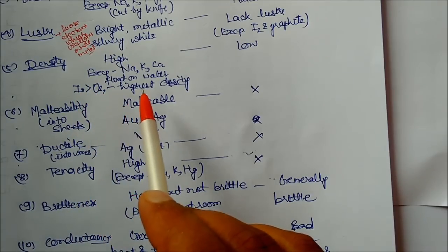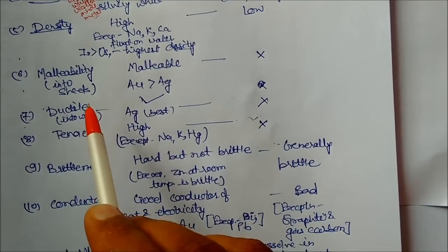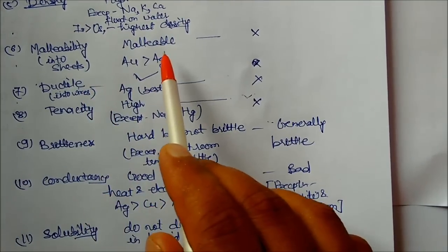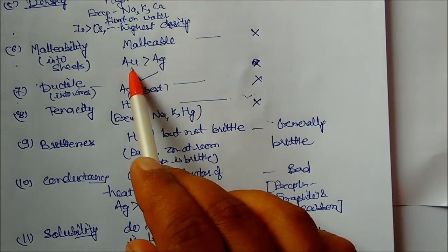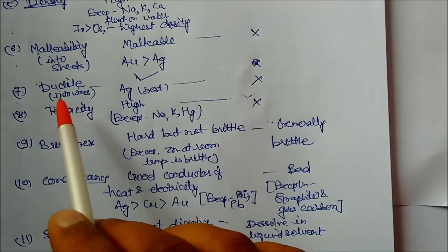Malleability means which can be converted into sheets. Gold is the first one followed by silver. Nonmetals have no malleable property.